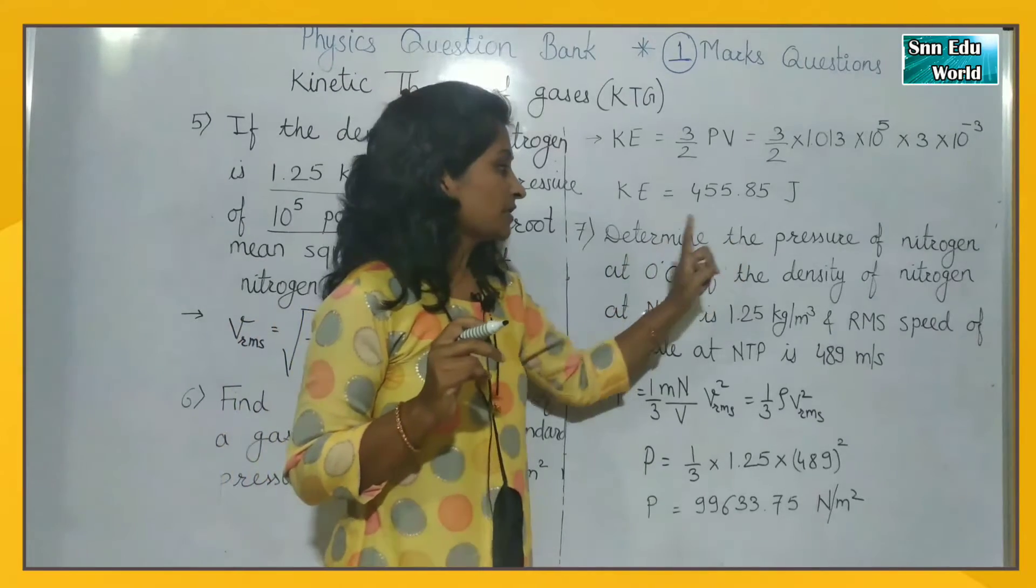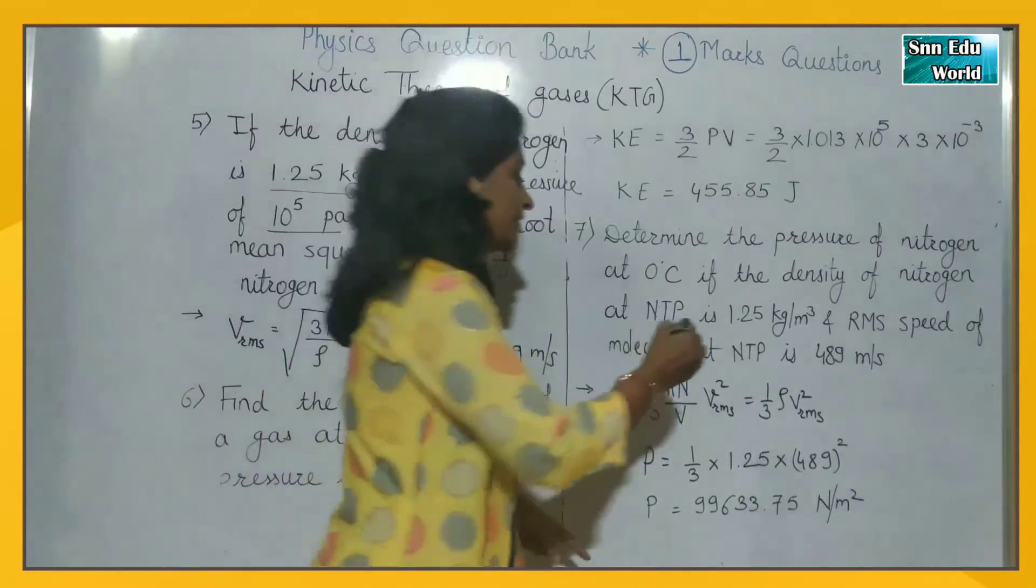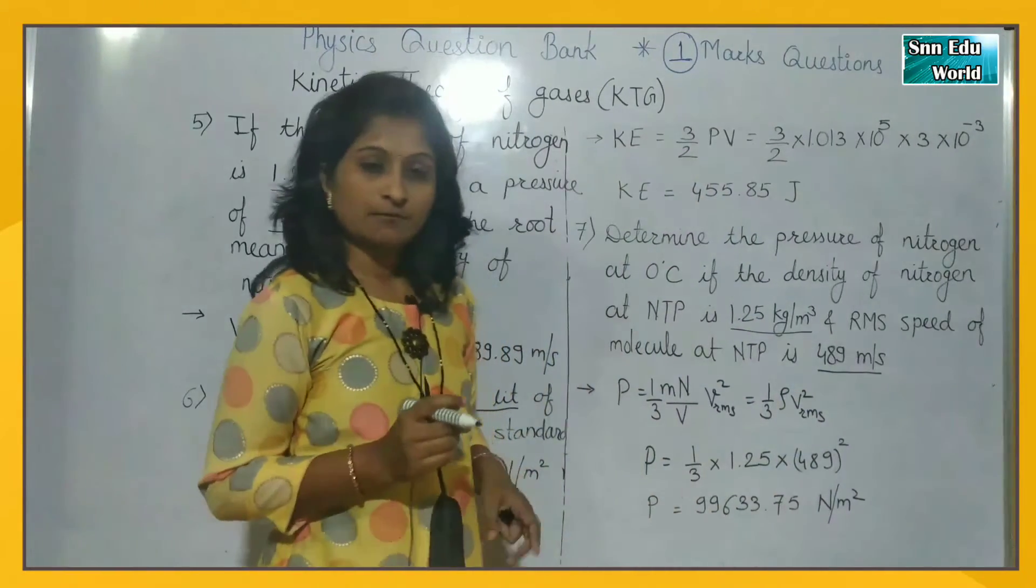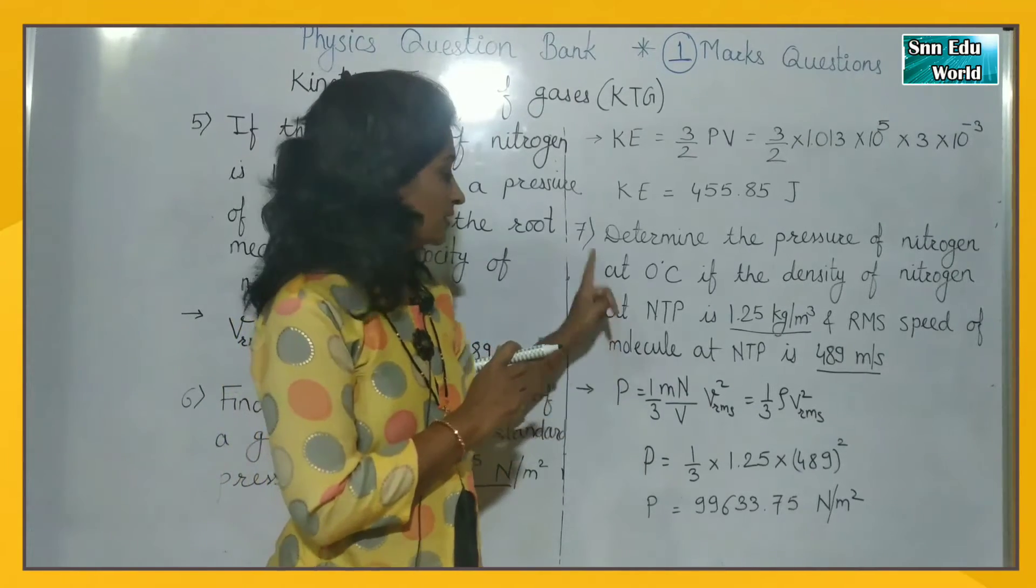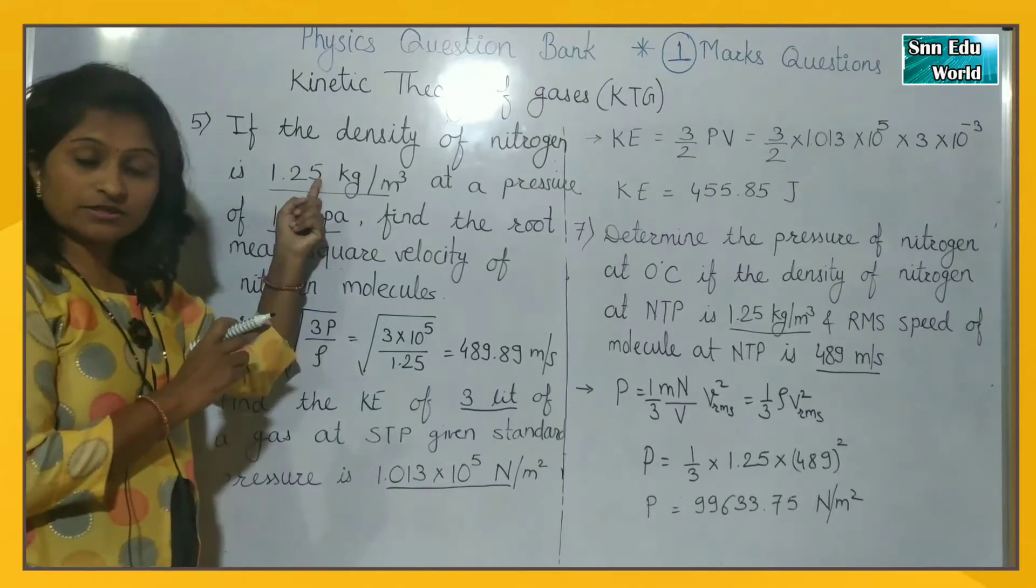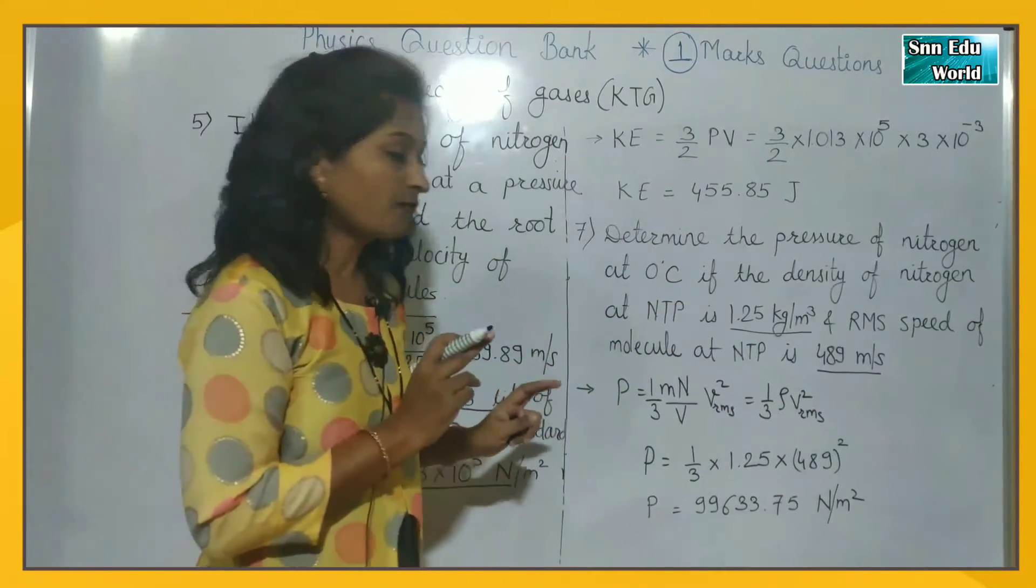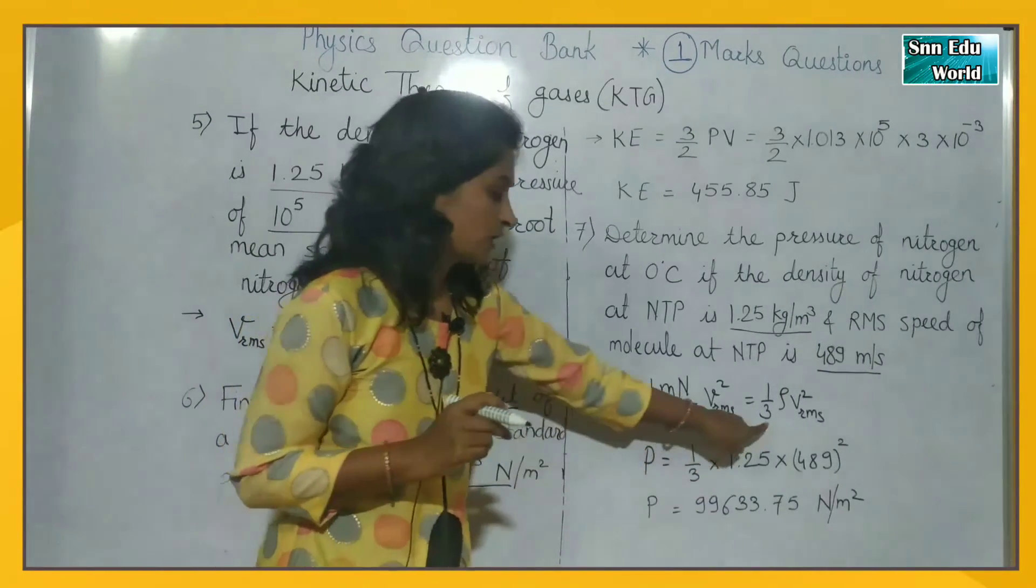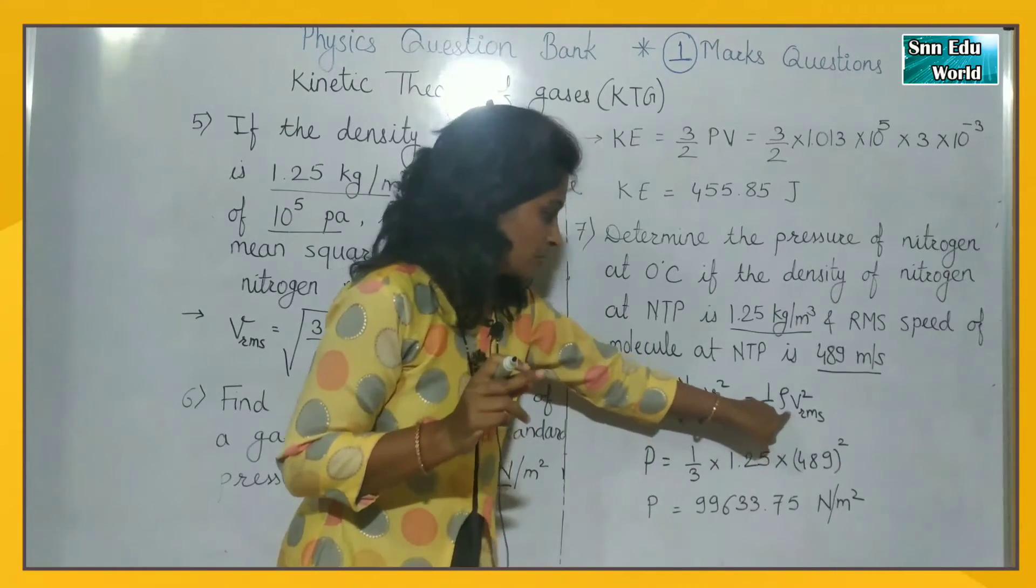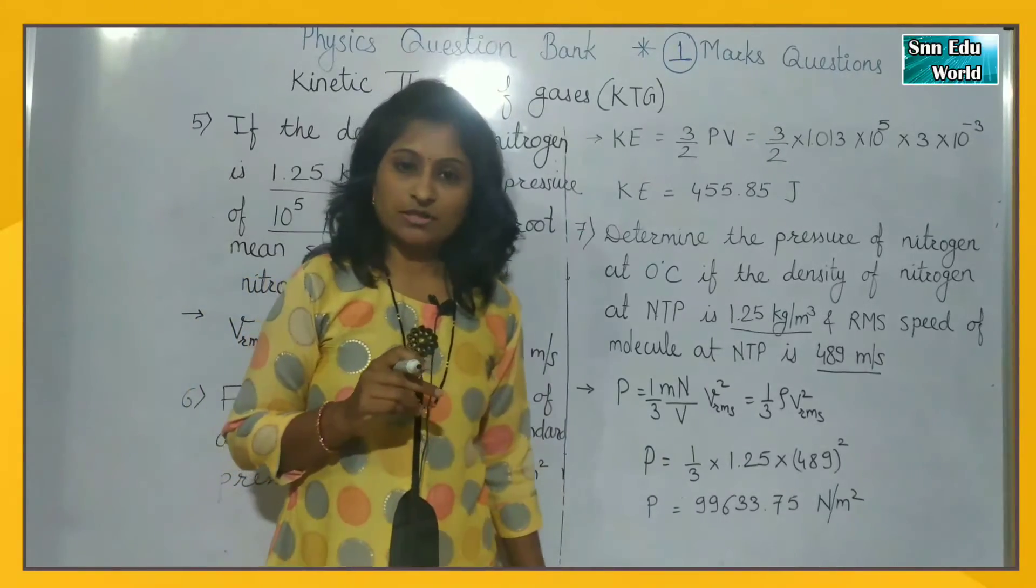Last question for one mark. Determine the pressure of nitrogen at 0 degree celsius. Now see, pressure find out. If the density of nitrogen at NTP is given and RMS speed of molecule at NTP is 489 meter per second, we have to find pressure. So density and RMS speed is given here. So use the formula: pressure is equal to 1 by 3 times rho times Vrms square. Direct value substitution and solve. So this is your answer for the pressure of nitrogen.